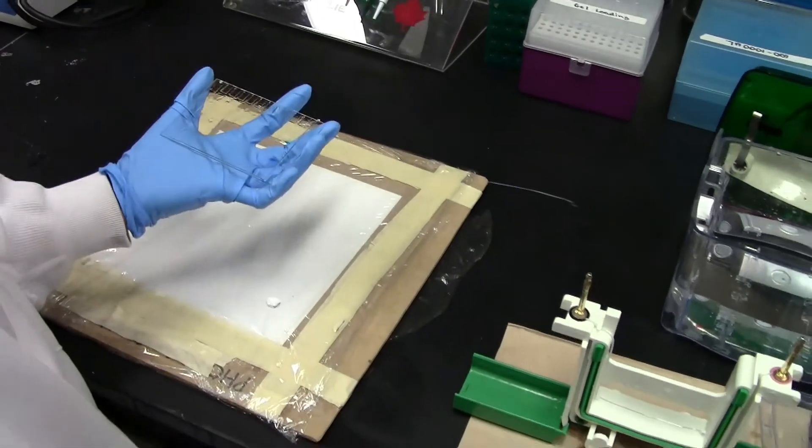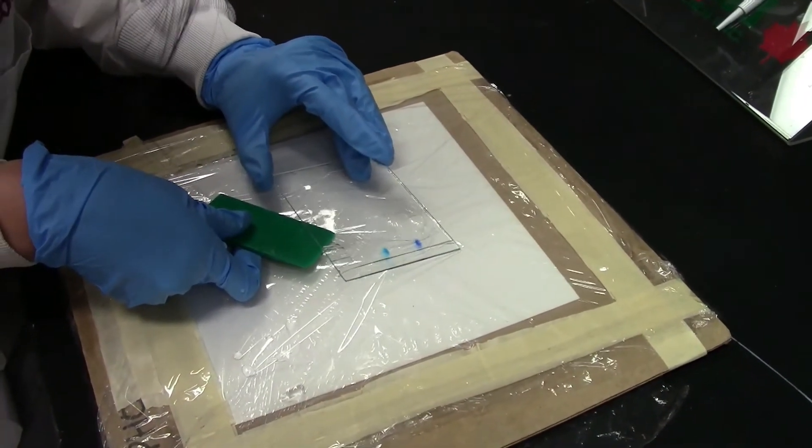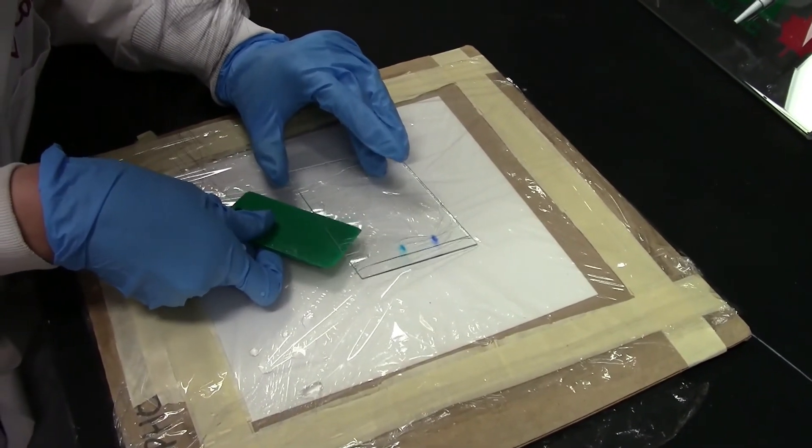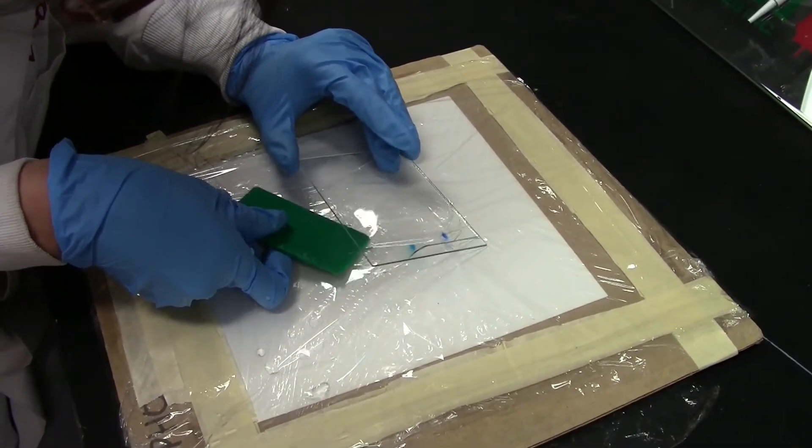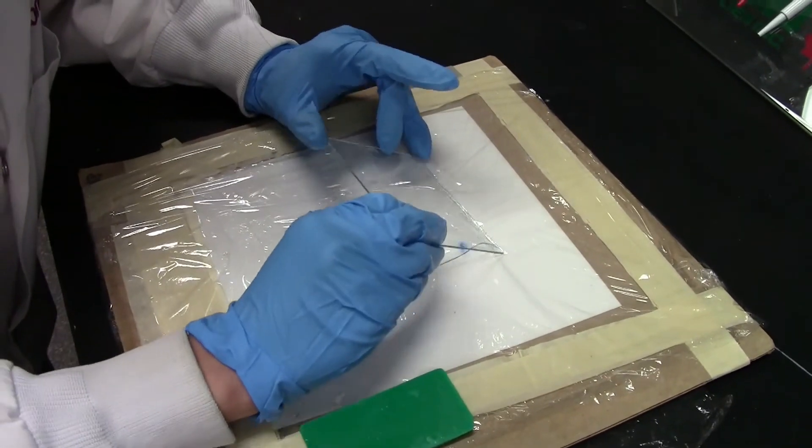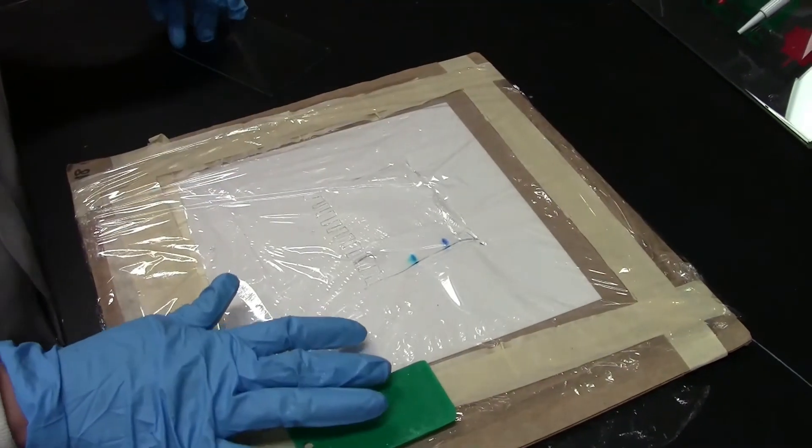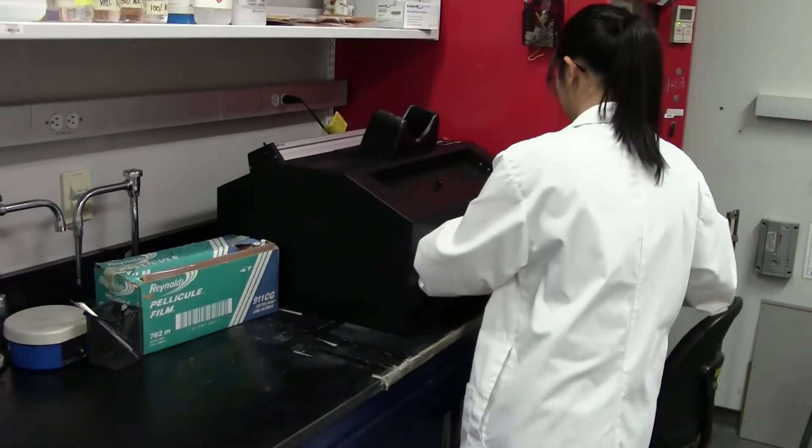Use the gel releaser to pry apart the two plates and then gently transfer the gel onto a square of cardboard covered in a fresh layer of saran wrap. Be patient when trying to transfer the gel onto the cardboard as the gel often adheres to the gel plate and easily tears when too much force is applied.